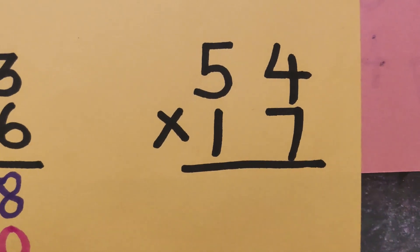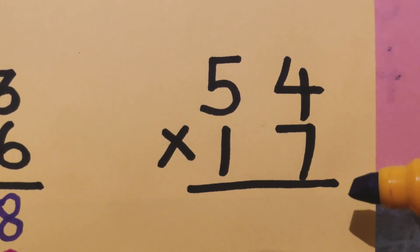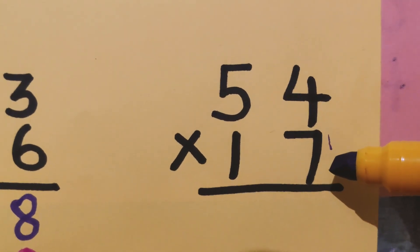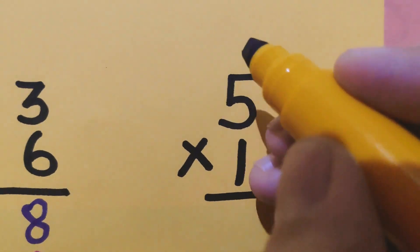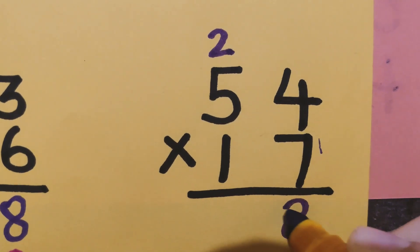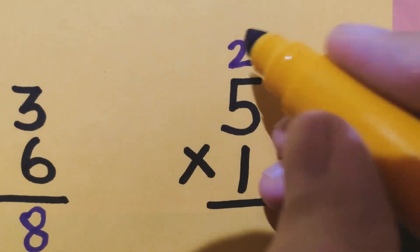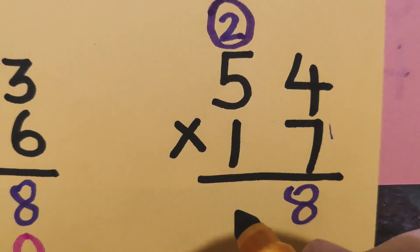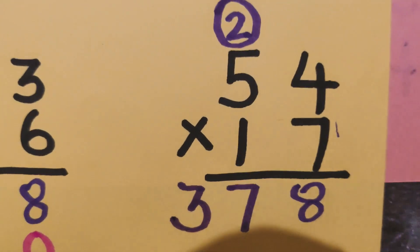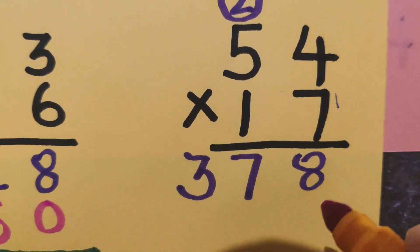Let's see another example, children: 54 multiplied by 17. Let's start with the first step M, which is multiply with the ones digit. 7 times 4 is 28 — so 2 carry, 8 here. Then 7 times 5 is 35, plus 2 is 37. Now the second step: O means put 0 or put O.